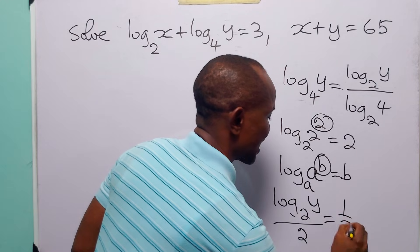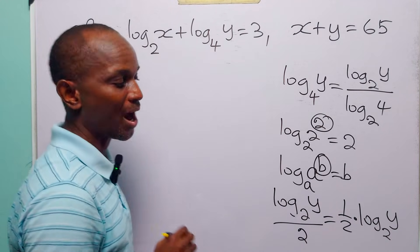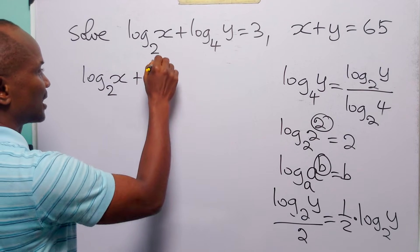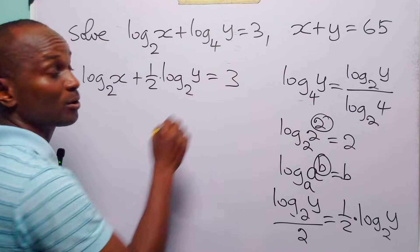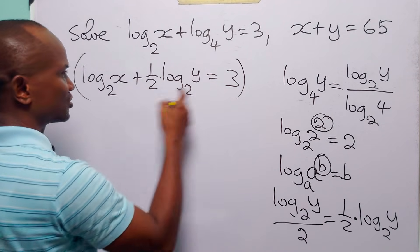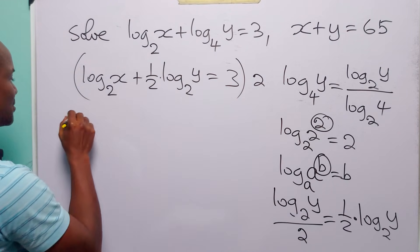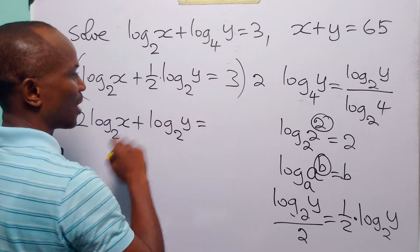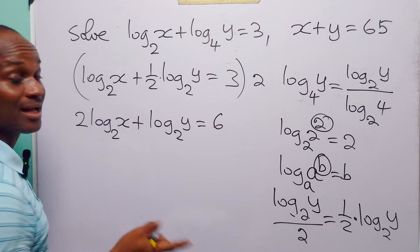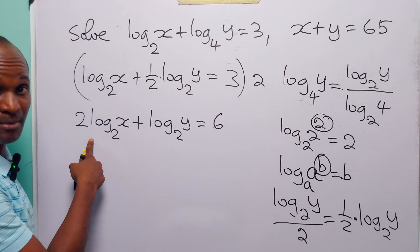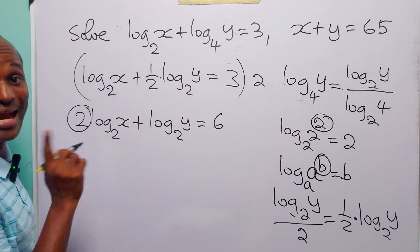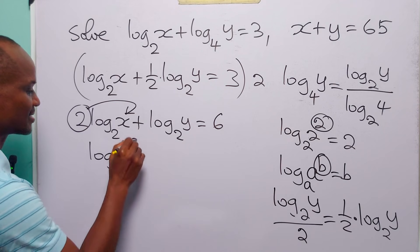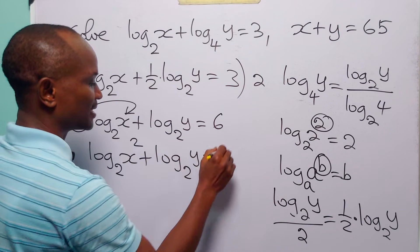So we can rewrite this logarithmic equation as log to base 2 of x plus one half times log to base 2 of y is equal to 1, and after multiplying through by 2 we get 2 log to base 2 of x plus log to base 2 of y is equal to 6. We now apply the power rule of logarithms to the first term, taking the multiplier 2 up as the exponent of x, giving us log to base 2 of x squared plus log to base 2 of y is equal to 6.